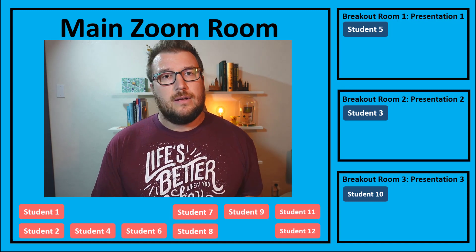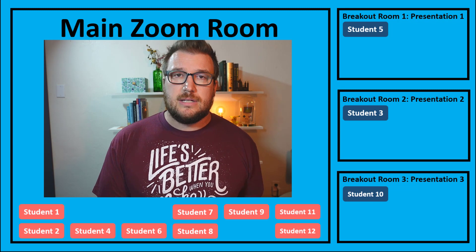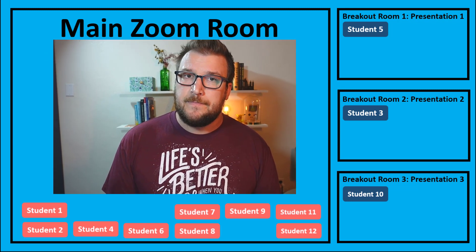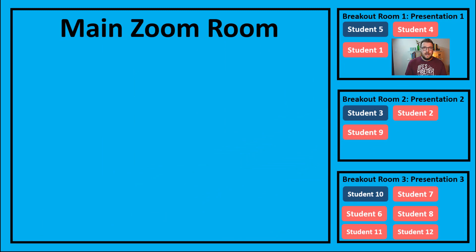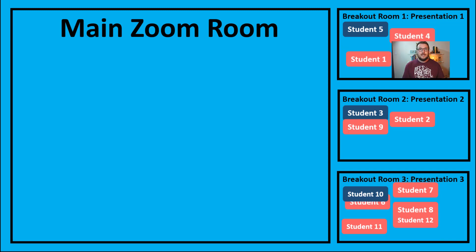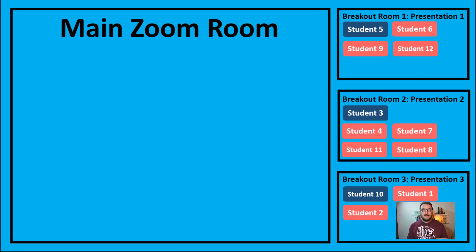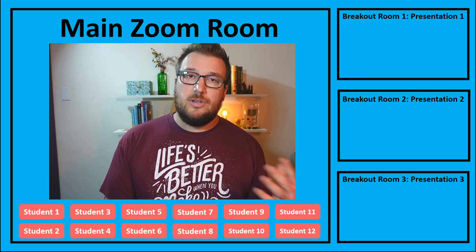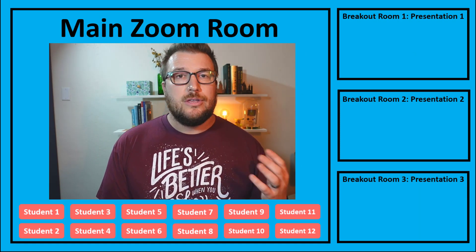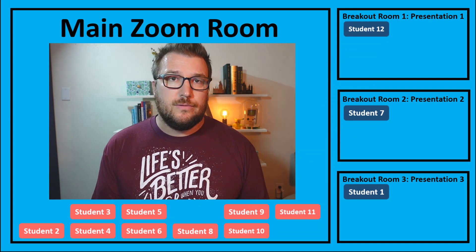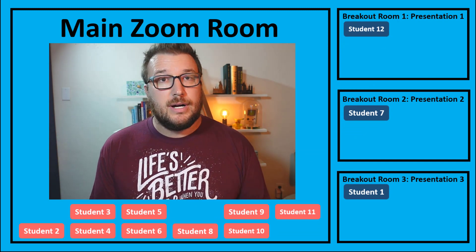Once presenters are in their assigned rooms, allow the rest of the class to go to whichever one interests them. Maybe give them 10 minutes in each room and then ask them to move to another one — you can even join a specific room to watch the presentation. Then everyone switches to another room, and you do that one more time to get through all three, come back to the main session, and have the next group of three students go as presenters.